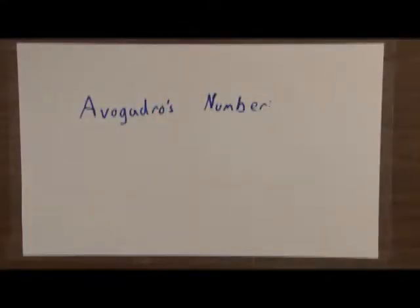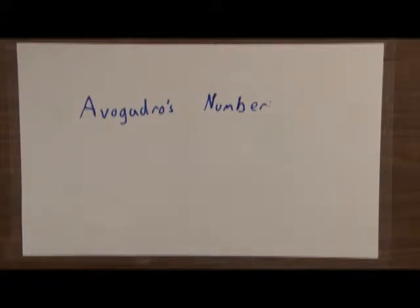The reason we use the mole is because it's really difficult to measure molecules on a one-by-one basis — it's difficult and expensive. So instead we use a number called Avogadro's number, which is the value of a mole.